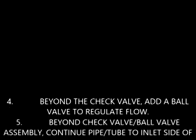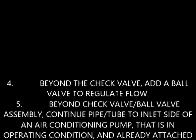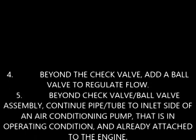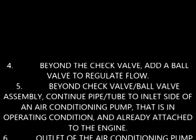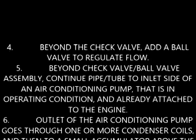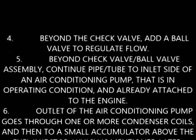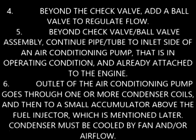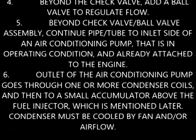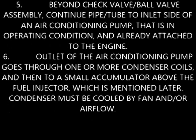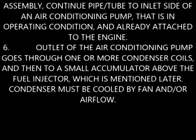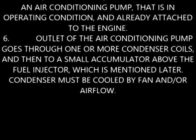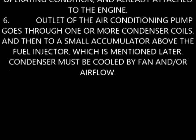Beyond the check valve, add a ball valve to regulate flow. Continue the pipe to the inlet side of an air conditioning pump that is in operating condition and already attached to the engine. The outlet of the AC pump goes through one or more condenser coils and then a small accumulator above the fuel injector, which is mentioned later. The condenser must be cooled by a fan and/or airflow.